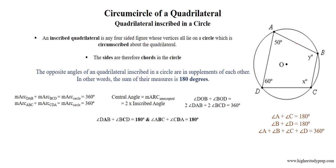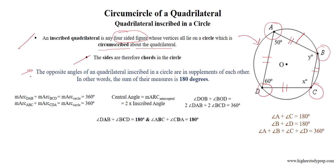Circumcircle of a quadrilateral, or quadrilateral inscribed in a circle: an inscribed quadrilateral is any four-sided figure whose vertices all lie on a circle which is circumscribed about this quadrilateral. The sides are therefore chords in the circle.